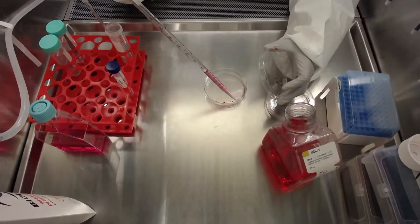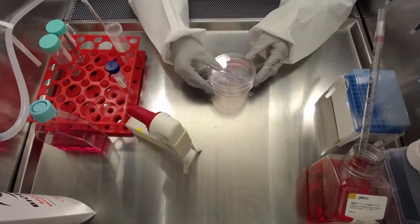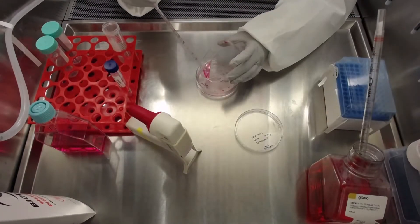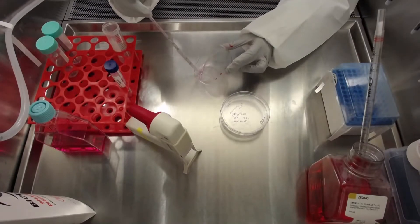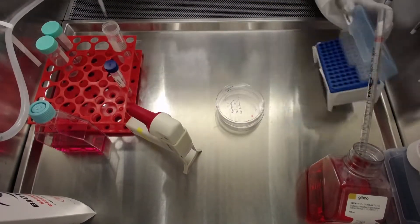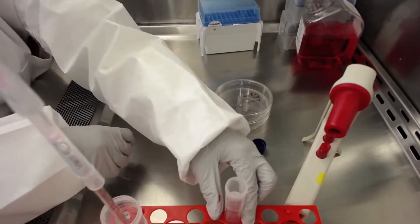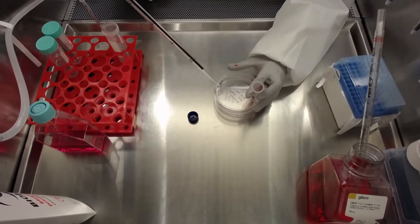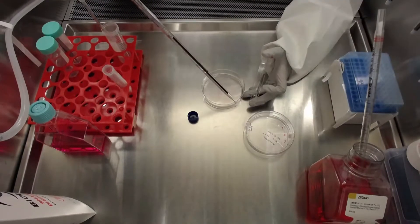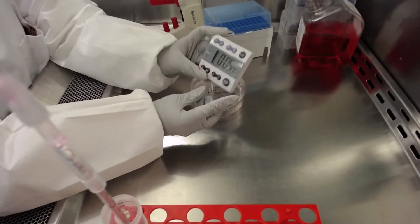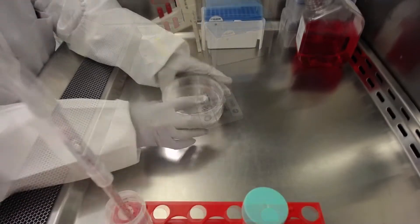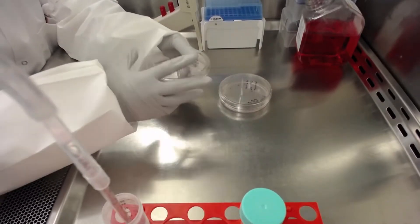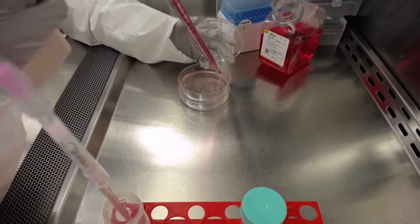Wash the cells with 5 milliliters of DMEM F12. Remove the media by aspiration and add 5 milliliters of Accutase to each dish to dissociate the cells. Incubate the cells at 37 degrees Celsius for 3 to 5 minutes. Once the colonies have detached, which can be facilitated by tapping the sides of the dishes, add 5 milliliters of DMEM F12 to stop the enzymatic reaction.